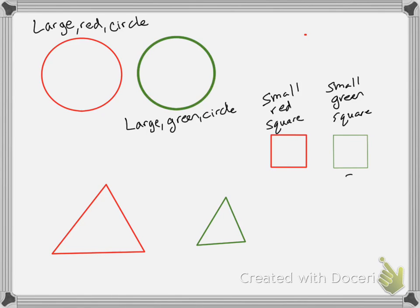So attributes are how we name shapes or objects. In this case we're naming them by their size, by their color, and by their shape. And all of these shapes differ in just one way from the one that's very similar to it.